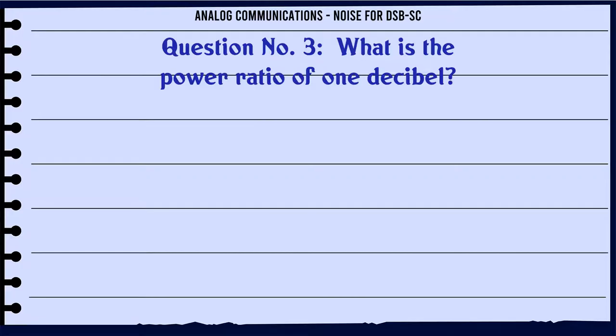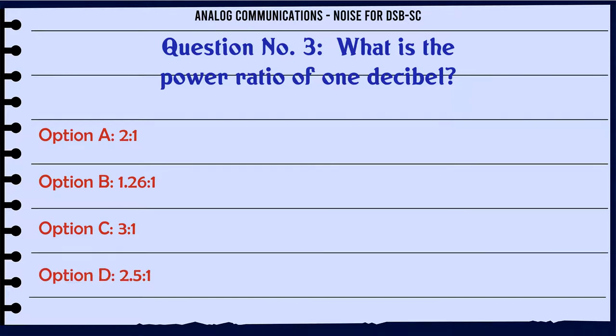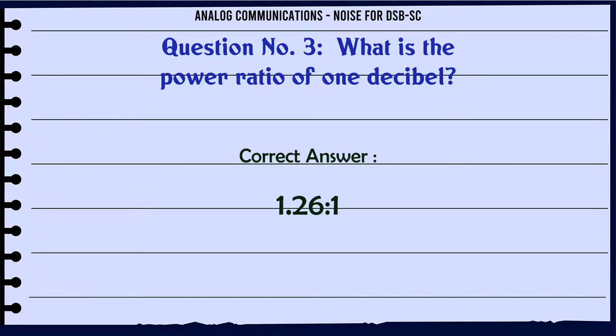What is the power ratio of 1 dB? Option A: 21. Option B: 1.261. Option C: 31. Option D: 2.51. The correct answer is 1.261.